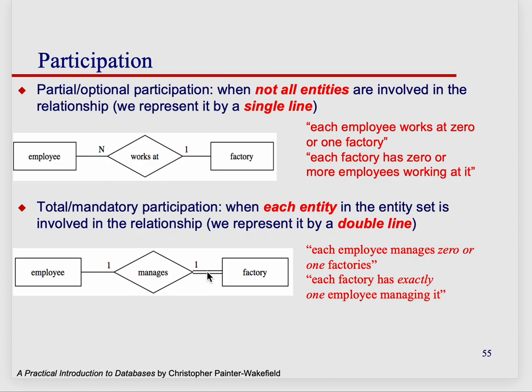If we had double lines by N, it means you can't be zero. This is something we're going to see more of. But this is the difference between partial and total participation.